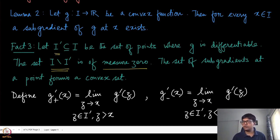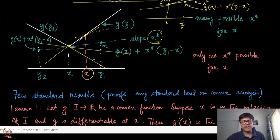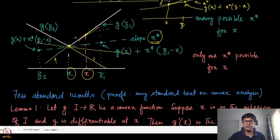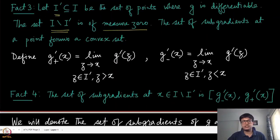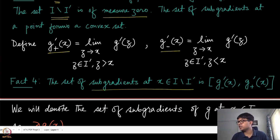We can think of the previous example: the subgradients range from the left derivative to the right derivative at a non-differentiable point. Fact 4 formally states that the set of subgradients at a non-differentiable point x lies within the interval [g'⁻(x), g'⁺(x)], i.e., from the left derivative to the right derivative.